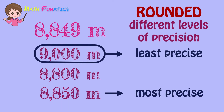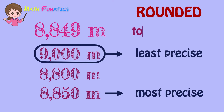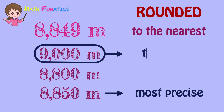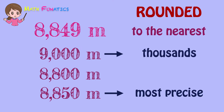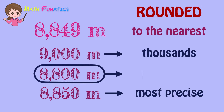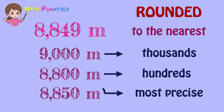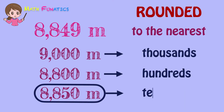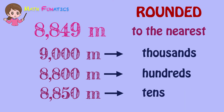In addition to this, 9,000 is the rounded value to the nearest thousands, 8,800 is the rounded value to the nearest hundreds, and 8,850 is the rounded value to the nearest tens.